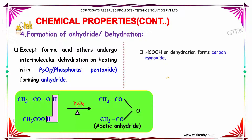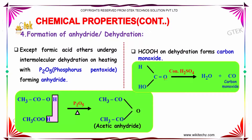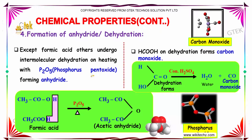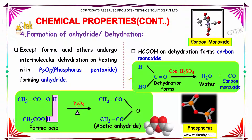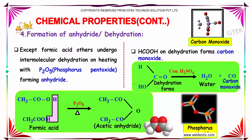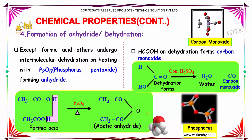Now let us discuss the formation of anhydride, or the dehydration reaction. Except formic acid, others undergo intermolecular dehydration on heating with phosphorus pentoxide, forming anhydrides. HCOOH, that is formic acid, on dehydration forms carbon monoxide.